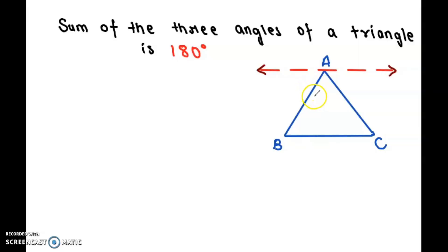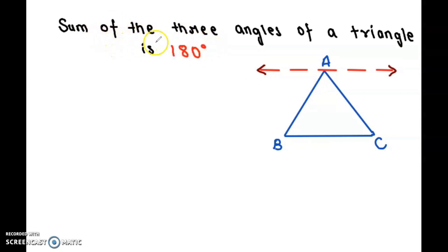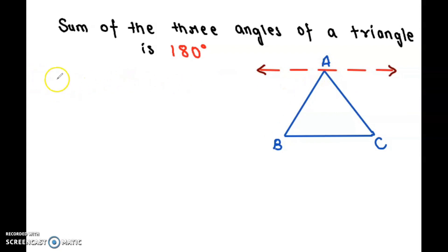Welcome back to my channel. Today we are going to prove that the sum of the three angles of a triangle is 180 degrees. This is a very basic property we all know, and here we are going to prove it.